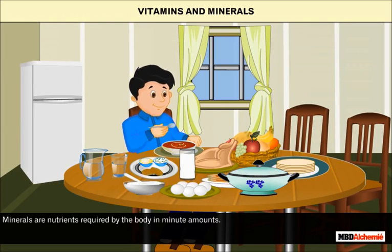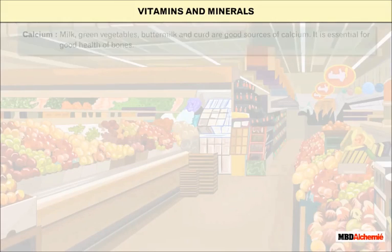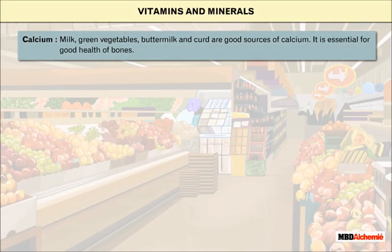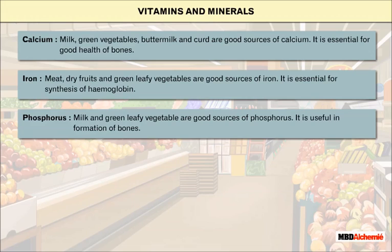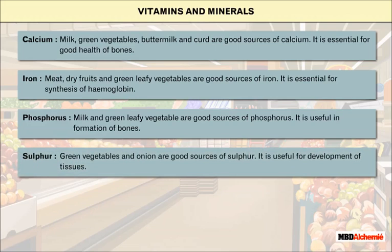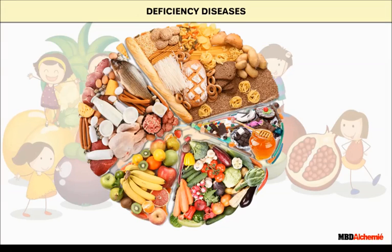Minerals are nutrients required by the body in minute amounts, also needed for the normal functioning of the body and good health. Milk, green vegetables, buttermilk and curd are good sources of calcium, essential for good health of bones. Meat, dry fruits and green leafy vegetables are good sources of iron, essential for synthesis of hemoglobin. Milk and green leafy vegetables are good sources of phosphorus, useful in formation of bones. Green vegetables and onion are good sources of sulfur, useful for development of tissues. Seafood and iodized salt are good sources of iodine, necessary for our growth.